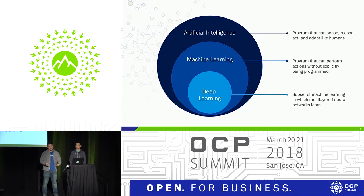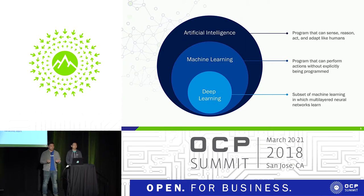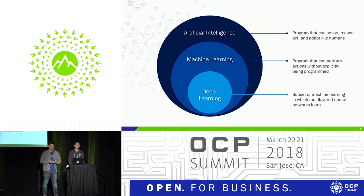Before I go into the details, I'd like to clear up three common terms used in the industry: artificial intelligence, machine learning, and deep learning. Artificial intelligence is the superset of everything — it's the program that can sense, reason, act, and adapt like humans. Machine learning is a program that can perform actions without explicitly being programmed. And deep learning is a type of technique used to do machine learning and artificial intelligence.